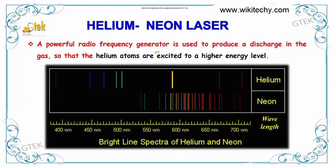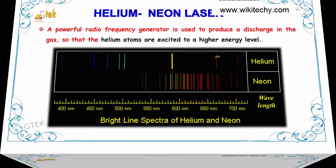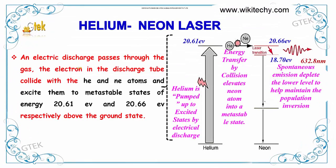A powerful radio frequency generator is used to produce a discharge in the gas so that helium atoms are excited to the higher energy level. An electric discharge passes through the gas. The electrons in the discharge tube collide with the helium and neon atoms and excite them to the metastable state of energy 20.61 eV and 20.66 eV respectively above the ground state. So helium is pumped up to the excited state by the electrical discharge.